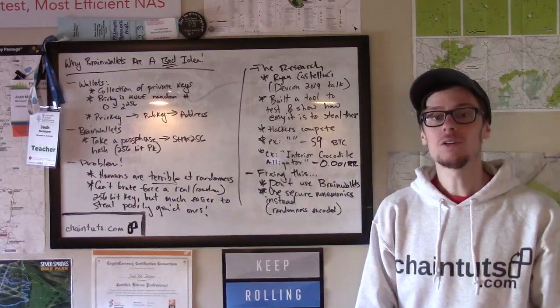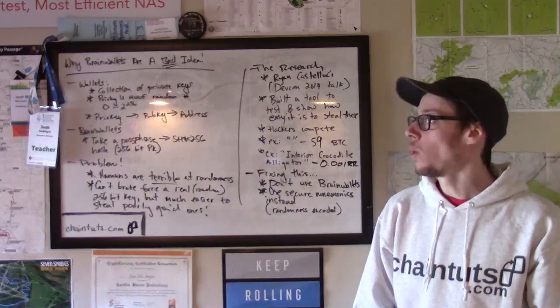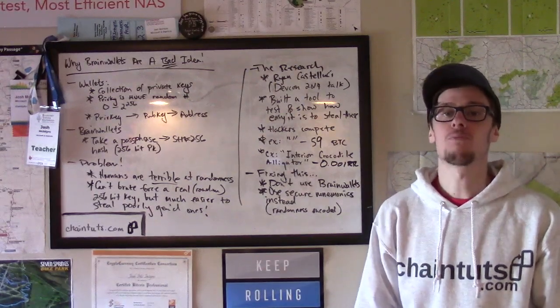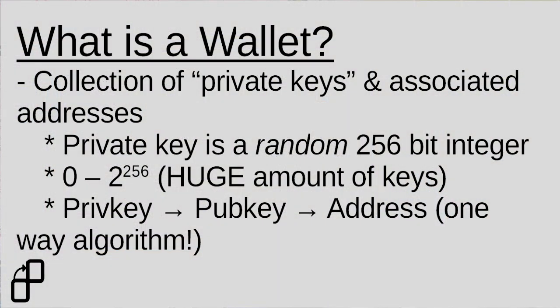First, let's talk a little bit about what a Bitcoin or cryptocurrency wallet actually is. What a wallet really is is a collection of private keys. Bitcoin operates using a public key cryptography system — specifically elliptic curve cryptography. Whenever you generate a Bitcoin wallet, it actually generates cryptographically secure random numbers to use as your private keys, and those are 256-bit keys.